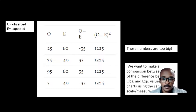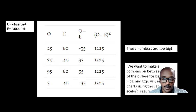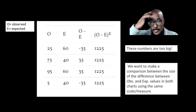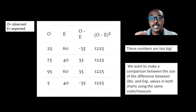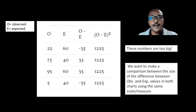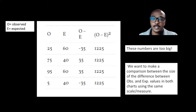The next step in making sense of whether these differences are significant is to square the observed minus expected values. Squaring gets rid of those negative numbers — if we square the delta statistic, we get a set of numbers that are all positive. But the problem is the numbers are too big. Think back to when we were dealing with mean, median, and mode — it's always helpful to have a statistic in the same unit of measurement as the variables. The value 1225 is much larger than any of the observed or expected values.